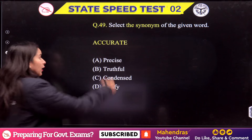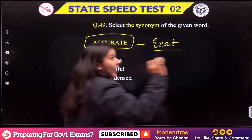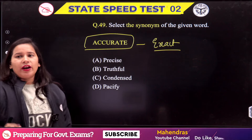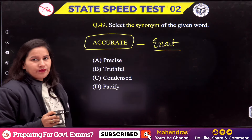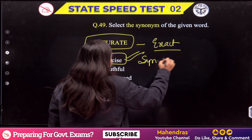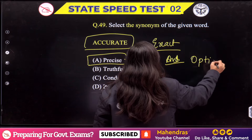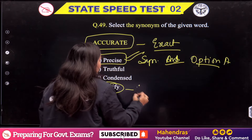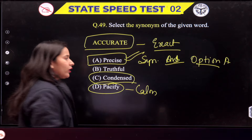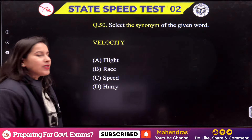Next: 'Accurate'. Accurate means exact — focus on accuracy means things should be correct. What will be the synonym? Obviously it will be 'precise'. That is Option A. Because 'pacify' means to calm things, and 'condense' is different. The correct answer is Option A — 'precise'.